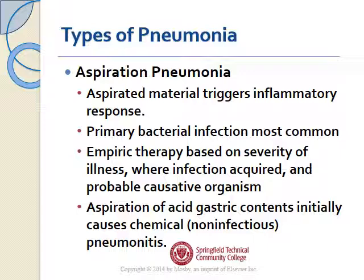Initially, if patients aspirate gastric contents, that can be treated with steroids and is considered a non-infectious chemical pneumonitis. You might see a patient treated with a shot of Solu-Medrol for difficulty breathing who then improved because they didn't have an actual bacterial infection — just gastric secretions causing irritation in the lungs.